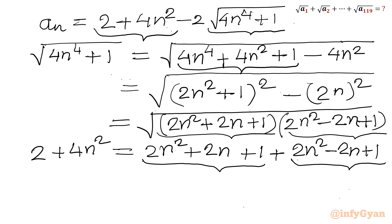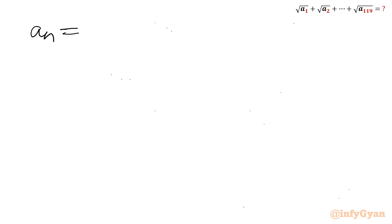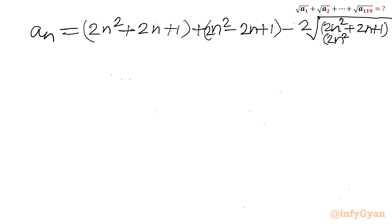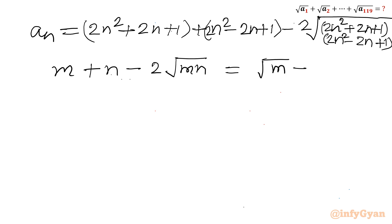So now I can write aₙ as (2n² + 2n + 1) plus (2n² − 2n + 1) minus 2 times square root of (2n² + 2n + 1)(2n² − 2n + 1). Using the identity m + n − 2√(mn) = (√m − √n)², this whole expression is the perfect square (√(2n² + 2n + 1) − √(2n² − 2n + 1))².